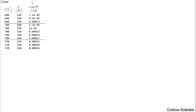So question one is: evaluate the n parameter in Norton's creep law. And then the second question: using the n value from the previous question, evaluate the Q parameter. So we will need all this data, but first of all we have to know where do these two parameters n and Q come from.